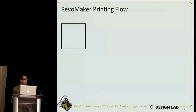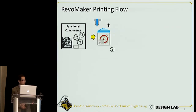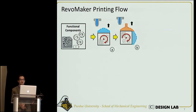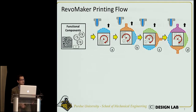The workflow for RevoMaker is as follows. We first generate a cuboid and embed all the functional components inside. Then we start the printing — there are two rounds of revolving and printing. In the first round, we revolve this cuboid about the out-of-plane axis, print the first four geometries, and add two handles on two opposite facets.